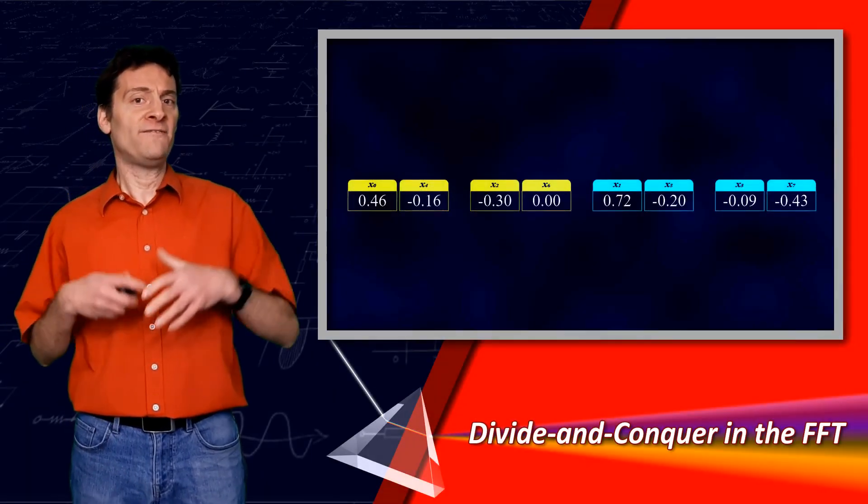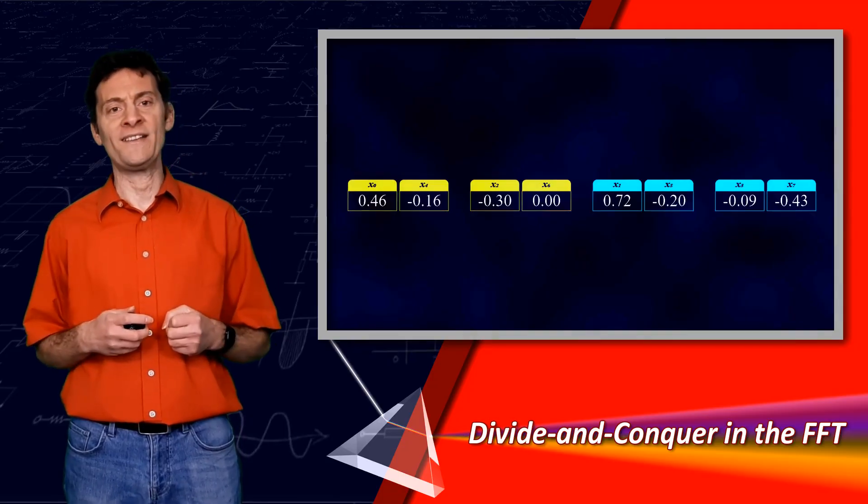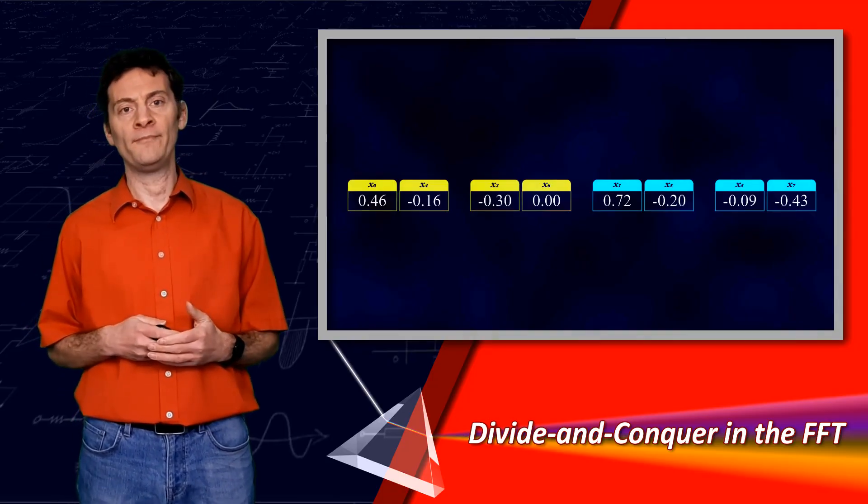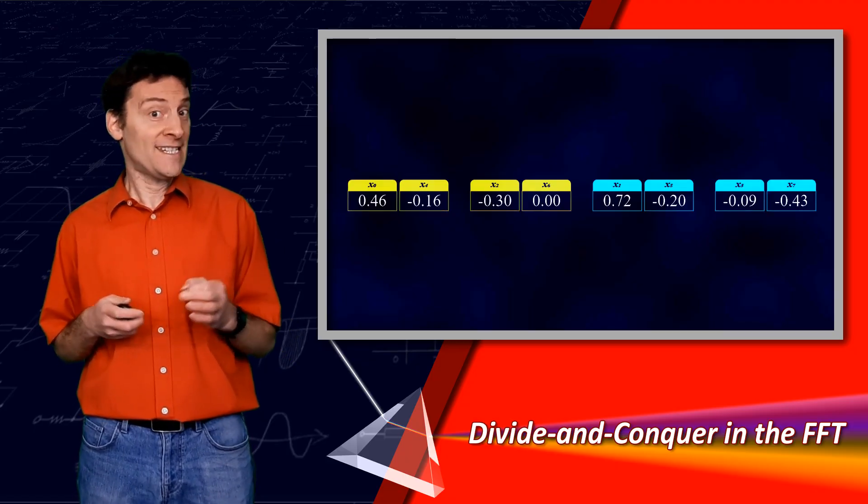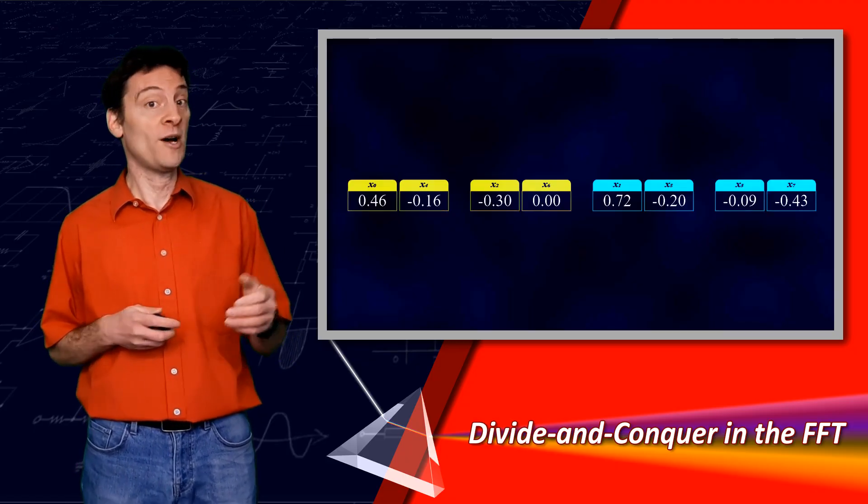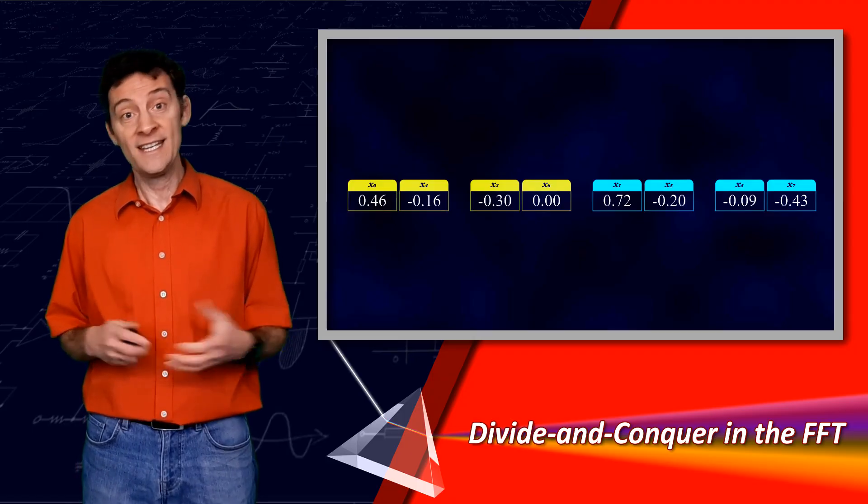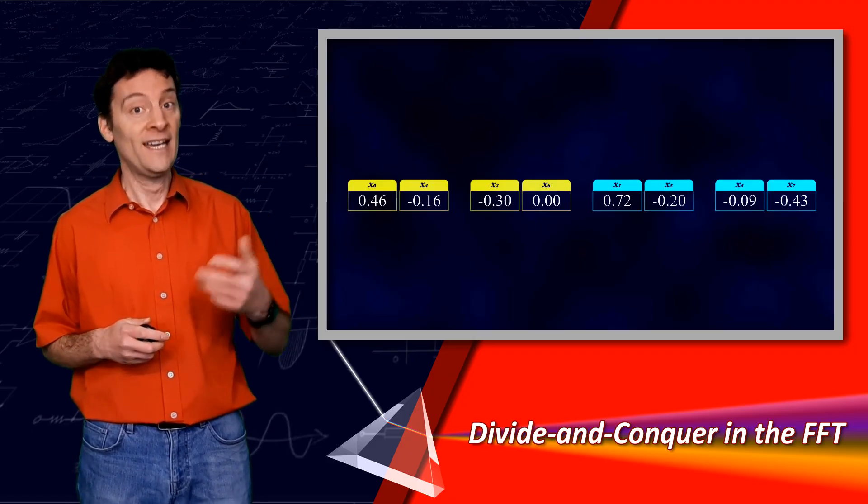So now we've successfully divided the array into these sample pairs, we need to conquer the problem. The beauty of divide and conquer is that to conquer a DFT containing only two samples, otherwise known as a two-point DFT, is simplicity itself. Here's why.